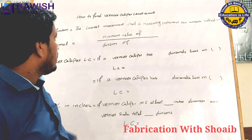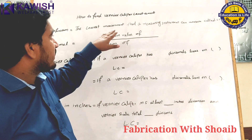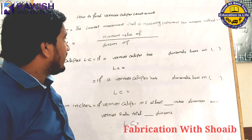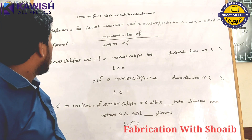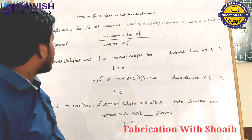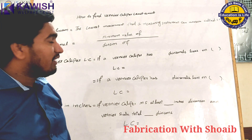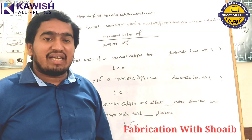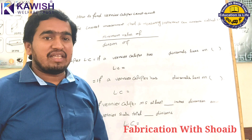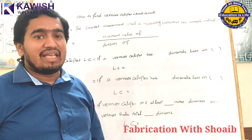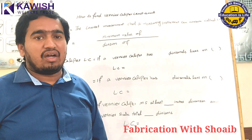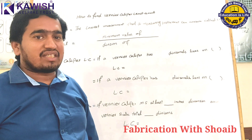Today we discuss how to find vernier caliper least count. First, the least count definition: the lowest measurement that a measuring instrument can measure is called least count.